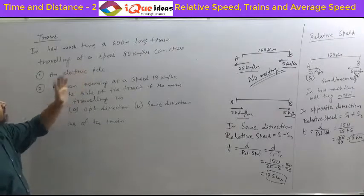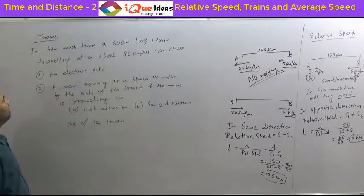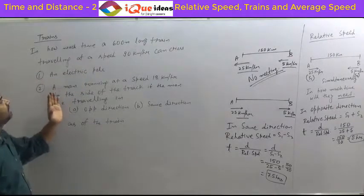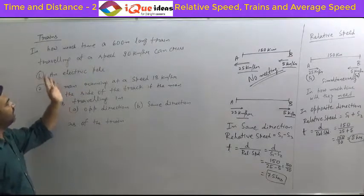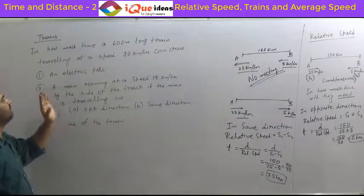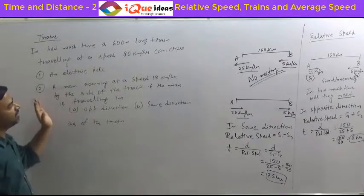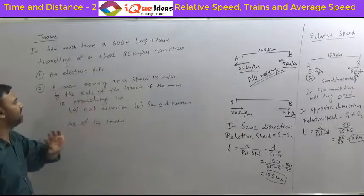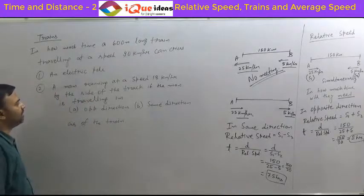In how much time a 600 meter long train travelling at a speed of 90 km per hour can cross an electric pole, and can cross a man running at a speed of 18 km per hour?